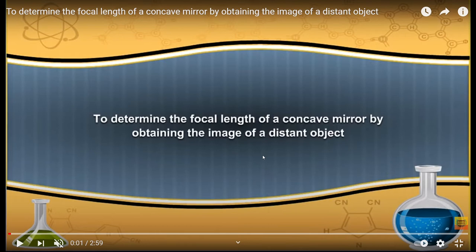Now let us understand the meaning of distant object first. A distant object is that object which is far away from the mirror. So from that object, the rays of light which will come will be parallel to each other.